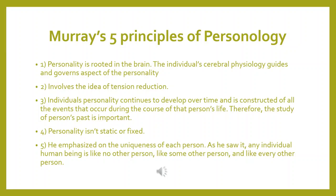The fourth principle is that personality is not static or fixed — which follows logically from the third principle: if personality is continuously developing, it cannot be static. The fifth and final principle emphasizes the uniqueness of each person. As Murray noted, any individual human being is like no other person, like some other person, and like every other person.